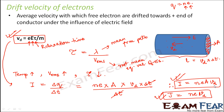These are some expressions which help you in easier calculations when you are solving numericals. If you are more interested in the concept, it has been explained in detail in the regular physics videos for class 11th and 12th on examfear.com. So that was all about the drift velocity of electrons.